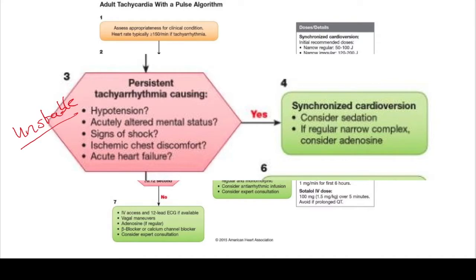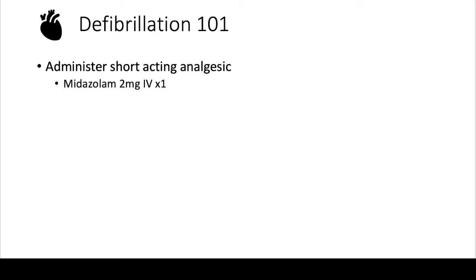When you are thinking about doing a synchronized cardioversion, there are a few things you have to understand. Whenever you are going to be shocking someone, if they are with it or a little bit confused, you want to make sure you give them an analgesic — you don't want them in pain. Some of the things you'll see given in the hospital is midazolam, also known as Versed, usually given at about 2 mg IV to make the person a little bit sleepier and to help them forget the fact that you're shocking them.